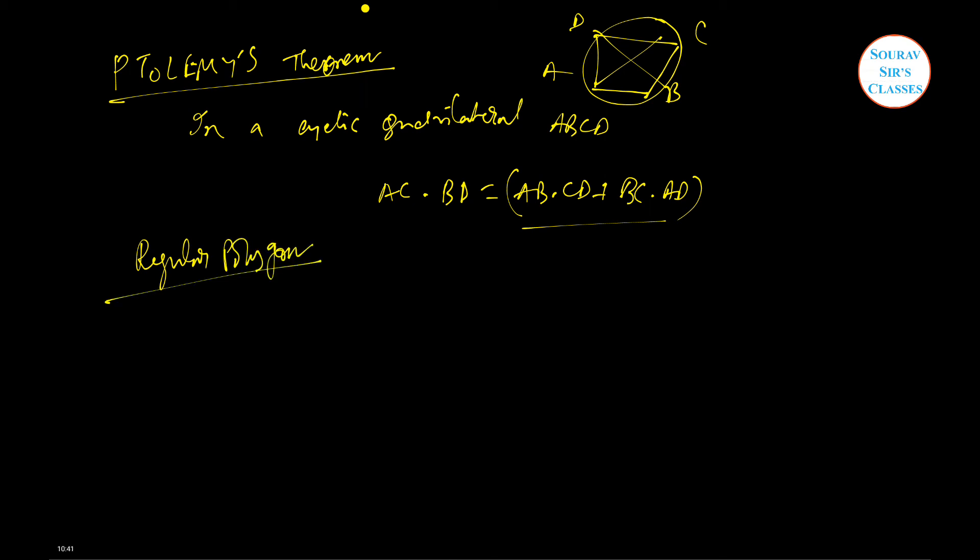Another one is on regular polygons. In a regular polygon, you need to remember that each interior angle of a regular polygon with n sides has a formula: n minus 2 times pi by 2. This is for n equal to sides. Regular polygon means all the sides are the same.